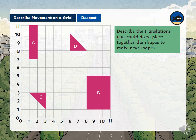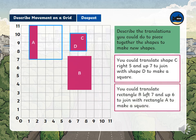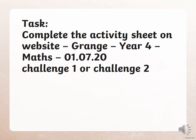Now describe the translations you could do to piece together shapes to make new shapes — pause the video for a few minutes and position a new shape for A, B, C, and D. Next, watch a short clip to further deepen your understanding of describing movements of shapes. Then go on to complete the task on the website — it's for maths and is dated 010720, challenge one or challenge two. Good luck with the task, and I should see you tomorrow. Bye guys!